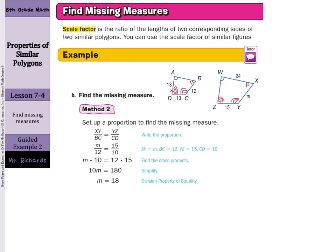The other method is to set up a proportion to solve. XY corresponds with BC, so XY over BC equals YZ over CD. We plugged in the numbers we know and the numbers we don't. M over 12 equals 15 over 10. Cross multiply, M times 10 equals 15 times 12. 15 times 12 is 180. 10M, divide by 10, and you get 18 that way. And now we will practice using one of each way.